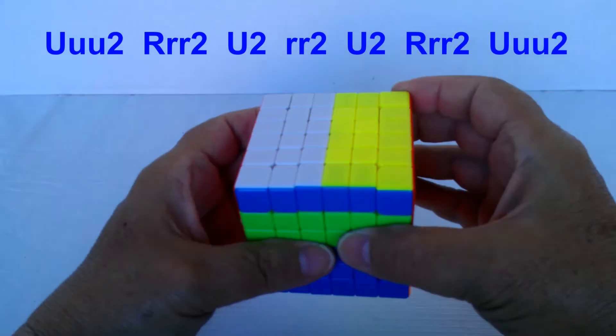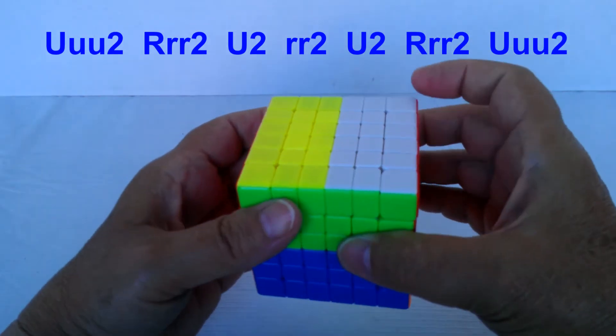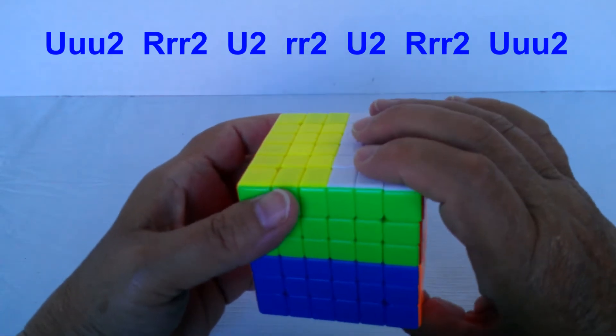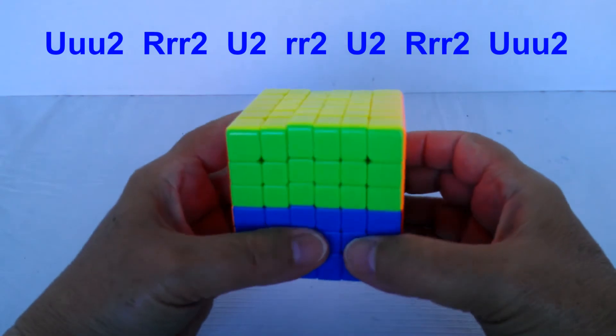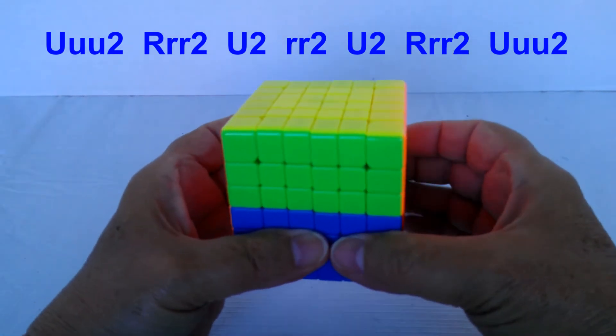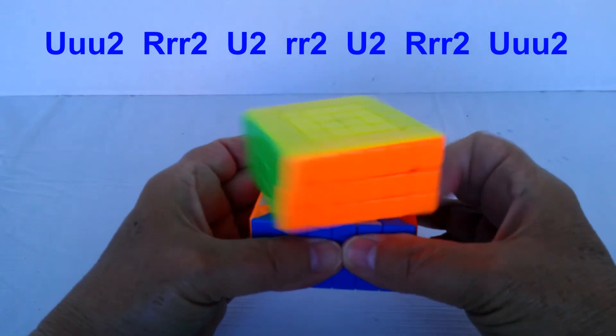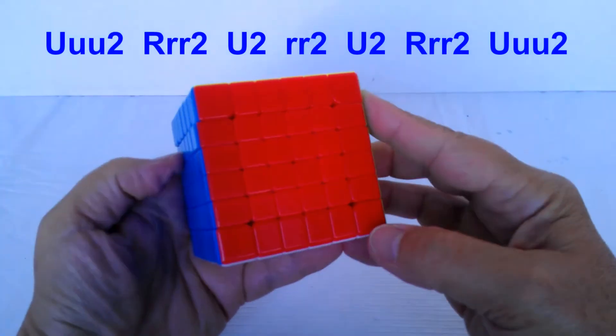and then back to a simple U2, with this one layer. Go back to the R triple wide 2, and the U triple wide 2, and solved.